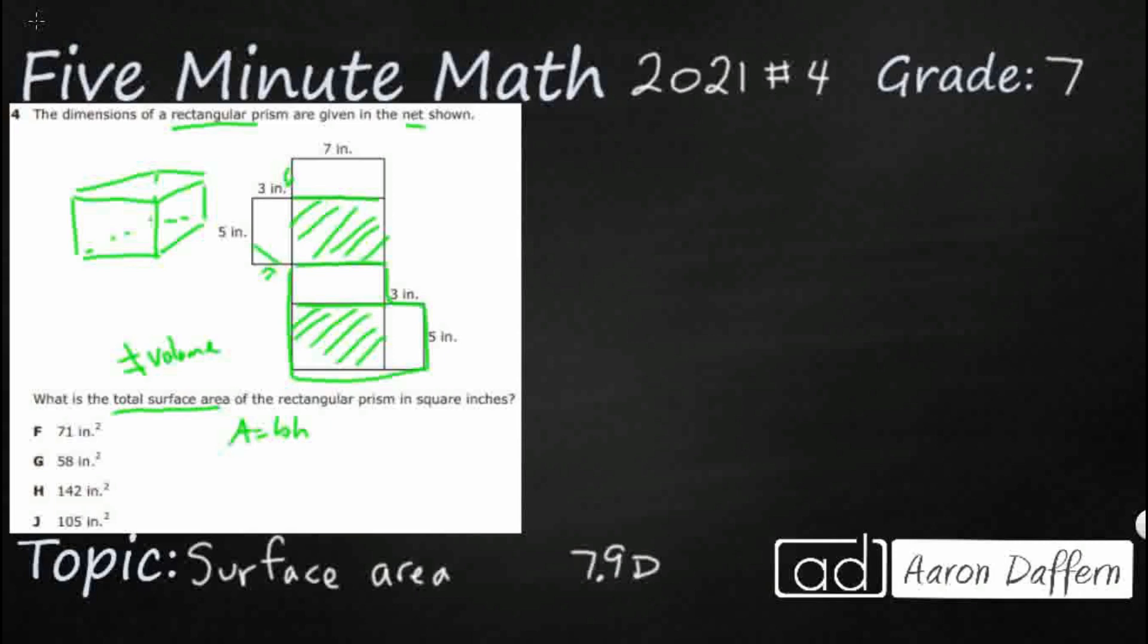These little guys, these almost look like tabs hanging out to the side. Those two are congruent. And then this one right here, this top one, I'm just going to put a little hash mark because those two are equal. So I only really need to find three rectangles.